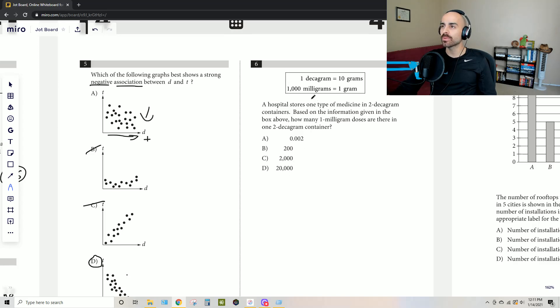In this problem, we can start from the beginning. We see that there's one type of medicine in two decagram containers. They want to know how many milligram doses are in that one decagram container. They give us a chart up here that's giving us some conversions. This is a huge flag for us to know that we're going to have to do some type of unit conversion.